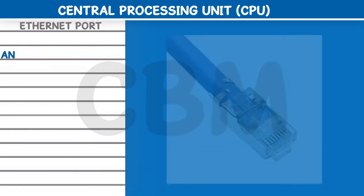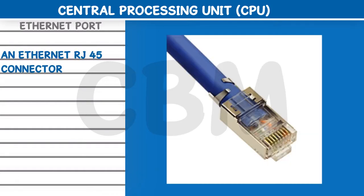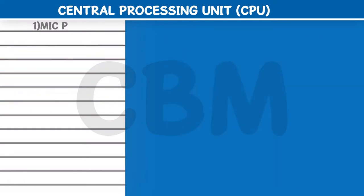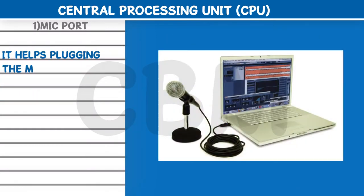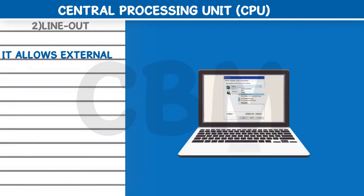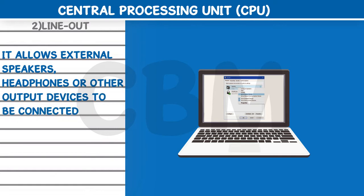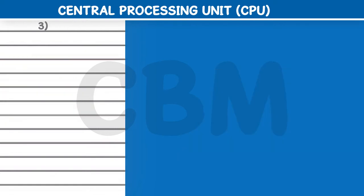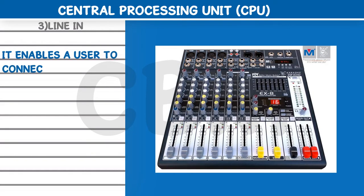Ethernet port: an Ethernet RJ45 connector looks like a telephone line RJ11 connector. Mic port: it helps in plugging the microphone into the computer. Line out: it allows external speakers, headphones, or other output devices to be connected to the computer. Line in: it enables a user to connect an external audio device to the computer.